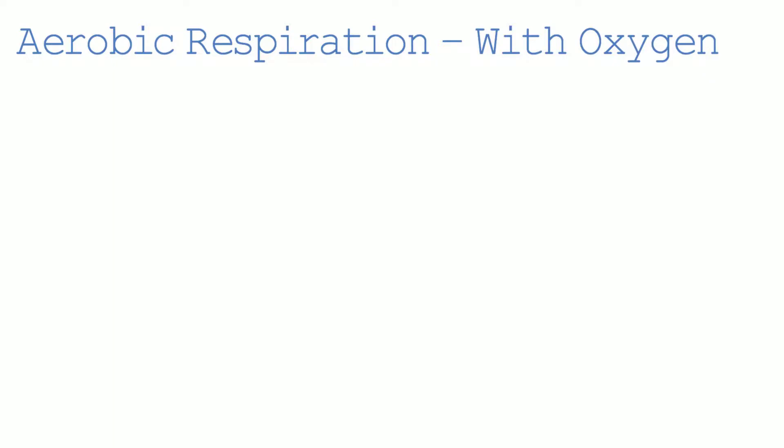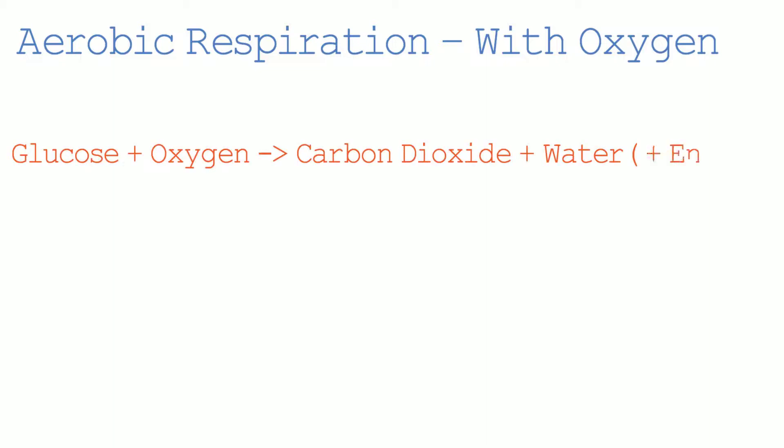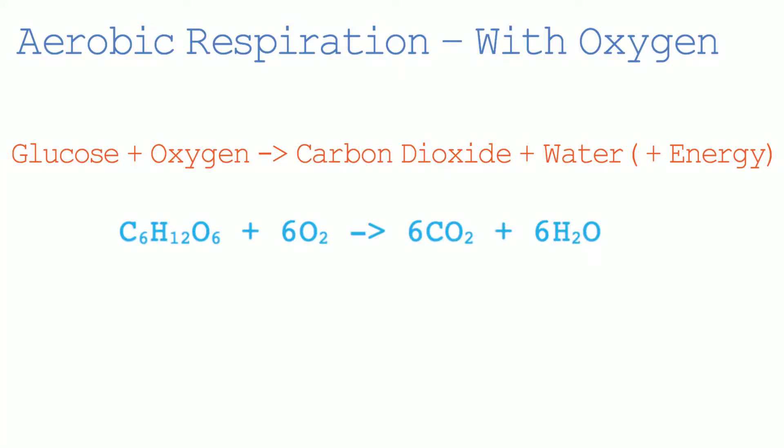Let's first have a look at aerobic respiration. Aerobic respiration is the breaking down of food substances in the presence of oxygen. The chemical process releases a large amount of energy. The equation for aerobic respiration is: glucose and oxygen react together to form carbon dioxide, water, and energy. We sometimes place the energy in brackets because it's not actually a substance.